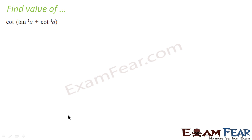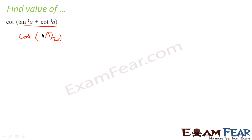Let us take one more example. We have to find the value of cot(tan⁻¹A + cot⁻¹A). This is a very simple question. We know that tan⁻¹A + cot⁻¹A = π/2. So this becomes cot(π/2), and cot(π/2) = 0. That is the answer — a simple application of the formula.